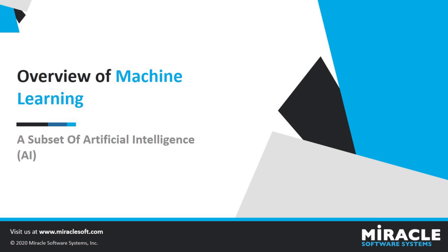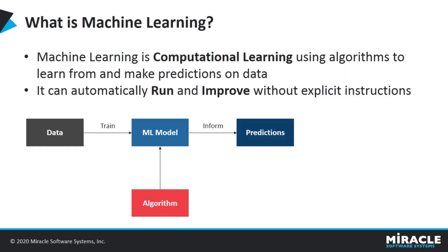What is machine learning? Machine learning is one of the most exciting technologies one would have ever come across. As it is evident from the name, it gives the computer the ability to learn, making it more similar to humans. Machine learning can be explained as automating and improving the learning process of computers based on their ability to learn. The process starts with feeding good quality data and then training our machines by building machine learning models using the data and different algorithms. The choice of algorithms depends on what type of data we have and what kind of task we are trying to automate.